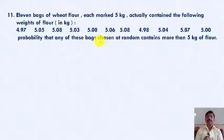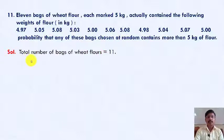We have to find the probability of these bags chosen randomly which contains more than 5 kg of flour. Solution: Total number of bags of wheat flour is equal to 11, because here 1, 2, 3, 4, 5, 6, 7, 8, 9, 10, and last one 11.